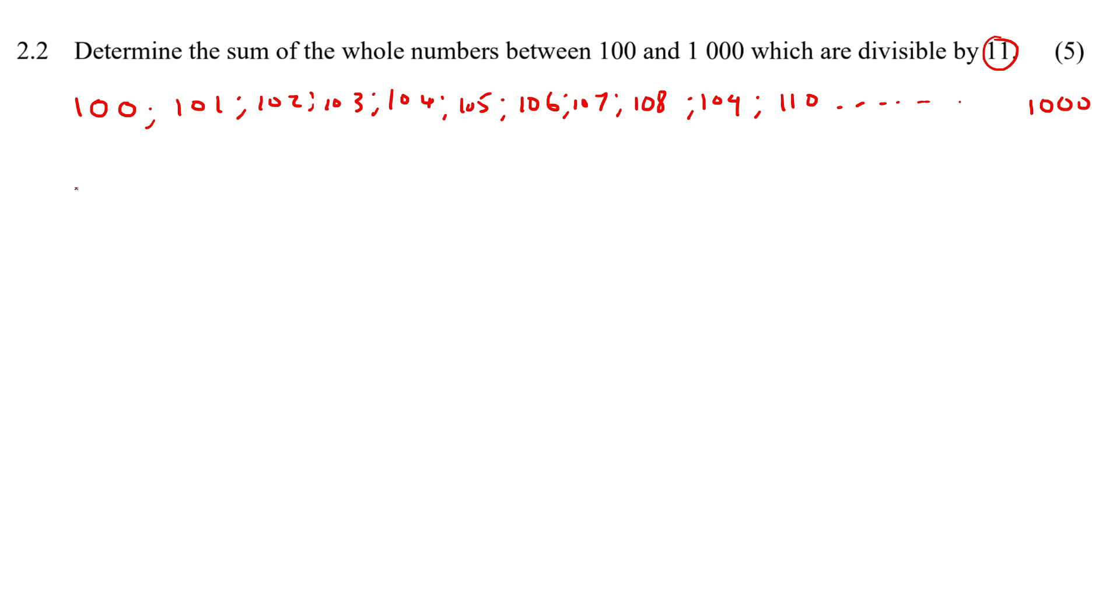So we know that if you count in 11s: 11, 22, 33, 44, 55, 66, 77, and so on, you'd get to 99, then you'd get to 110. So that's the first one.